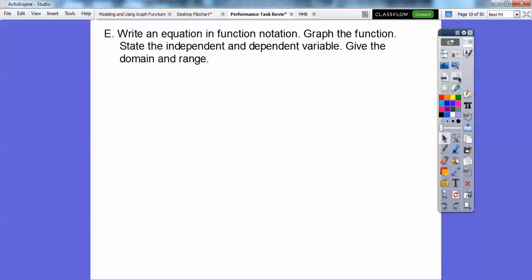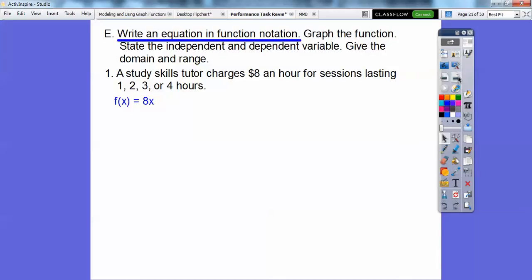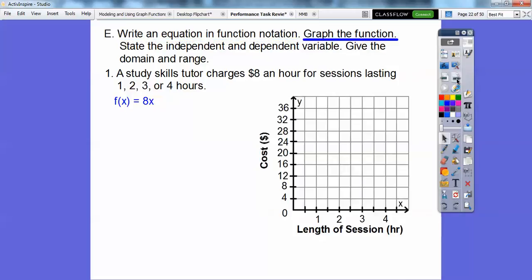Okay, so write an equation in function notation. Graph the function. State the independent and dependent variable. And then give the domain and range. There's a lot there. So here we have a study skills tutor charges $8 an hour for sessions that last 1, 2, 3, or 4 hours right there. So write an equation in function notation since it's $8 an hour. So remember, function notation is f(x). It's the same as y. This is the same as y equals 8x. But since it said function notation, then we say f(x) or f parentheses x. So there it is, $8 an hour right there.